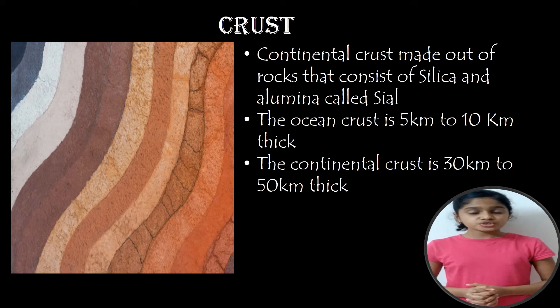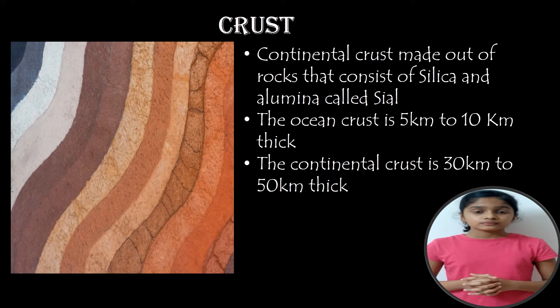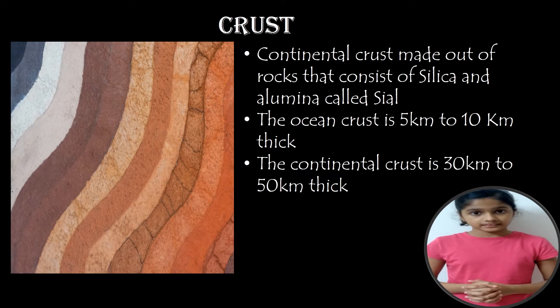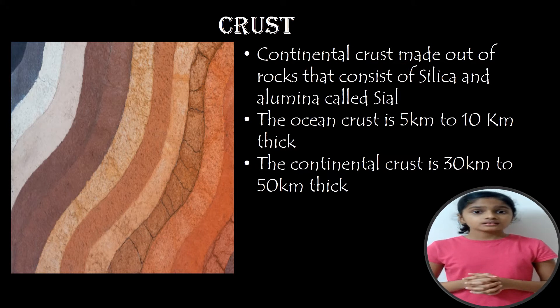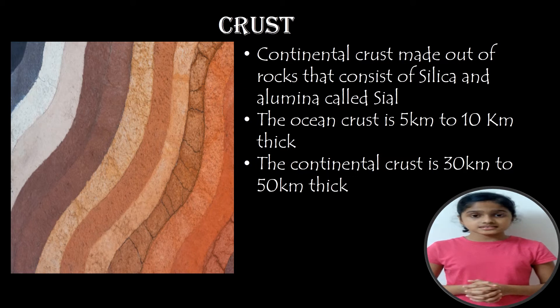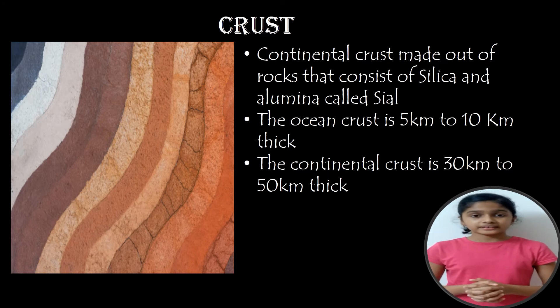The continental crust is made out of rocks that consist of silica and alumina, called sial. The ocean crust is 5 to 10 km thick, and the continental crust is 30 to 50 km thick.